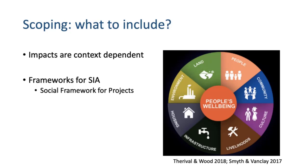What is common in research and guidance are frameworks to guide how we think about social impacts — not prescriptive lists, but a framework for how you might start to define those values. One example is the social framework for projects based on United Nations development criteria. It places people's wellbeing at the centre, with categories like land, environment, housing, infrastructure, livelihoods, culture, community, and people — where you can start thinking about what values and indicators to define under those, depending on context.